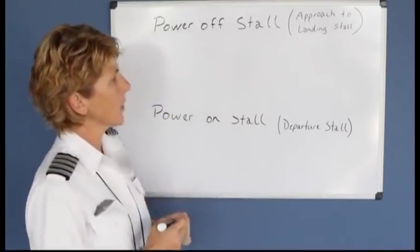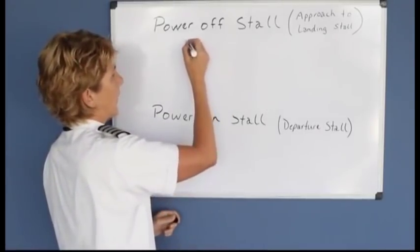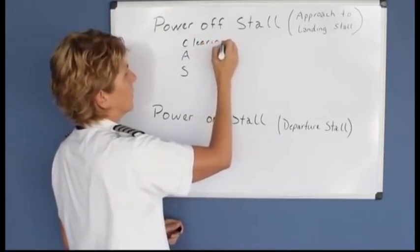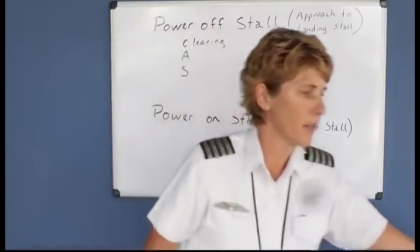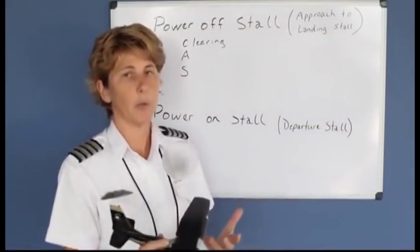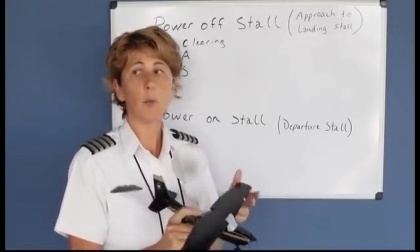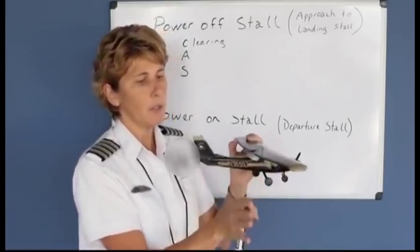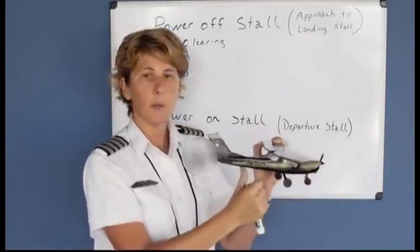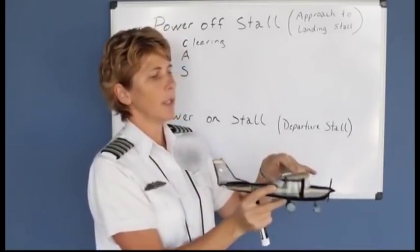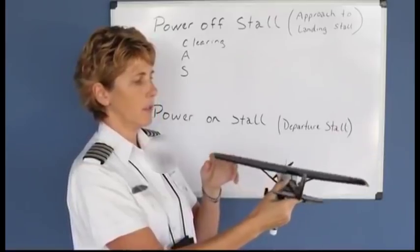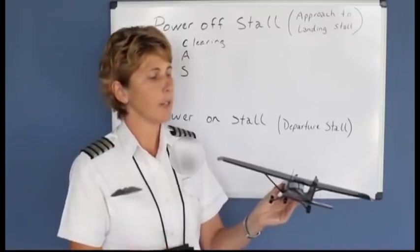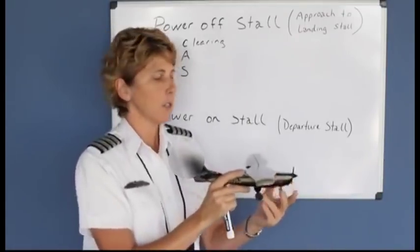When you do the power off stall, remember CAS. The C stands for clearing turns. The clearing turns consist of a 90 degree turn in one direction back to your original heading. It's best to ask the examiner, 'Will you help me look out for traffic while I clear the area?' If you're flying a southerly heading, you can see ahead and to the sides but not behind you. So if you clear left and turn in that direction, you can see what was behind you to make sure there's no other traffic. Then come back to your original heading.